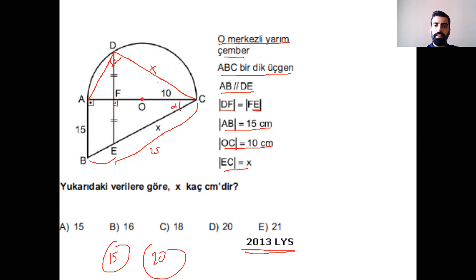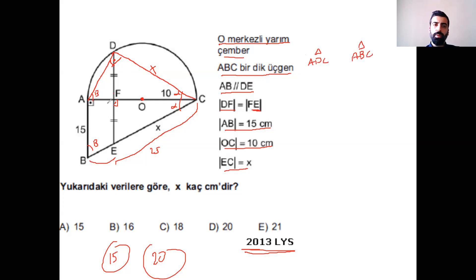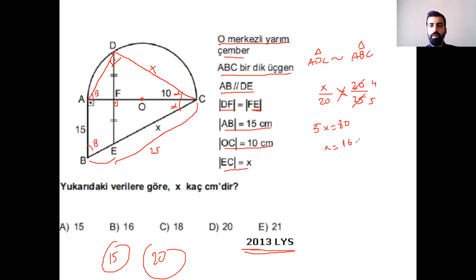Benzerlik yapıyorum. Burası alfaysa, ikiz kenar üçgen olduğu için buraya da alfa diyorum. Alfa, 90, beta. ADC üçgeninde alfa, 90, beta. Burası 90, burası alfa, burasına tekrar beta demiş oluyorum. Benzerlik kuruyorum: ADC üçgeni ile ABC üçgeni arasında. ADC üçgeninde beta'nın karşısında X birim var. ABC üçgeninde beta'nın karşısında AC yani 20 birim var; 90'ın karşısında 25 birim var. Sadeleştirme: 20/25 = 4/5. İçler dışlar: 5X = 80, X = 16.